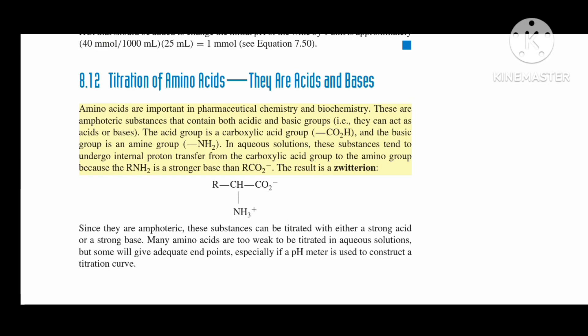Amino acids are important in pharmaceutical chemistry and biochemistry. These are amphoteric substances that contain both acidic and basic groups—they can act as acids or bases. The acid group is a carboxylic acid group (CO2H), and the basic group is an amine group (NH2). In aqueous solutions, these substances tend to undergo internal proton transfer from the carboxylic acid group to the amino group because RNH2 is a stronger base than RCO2-.